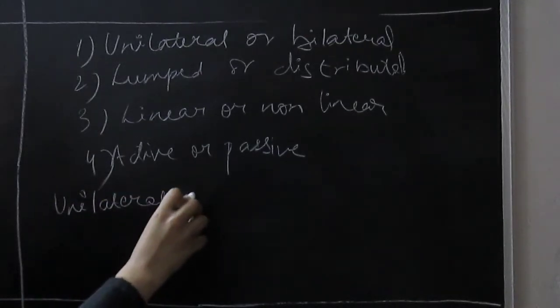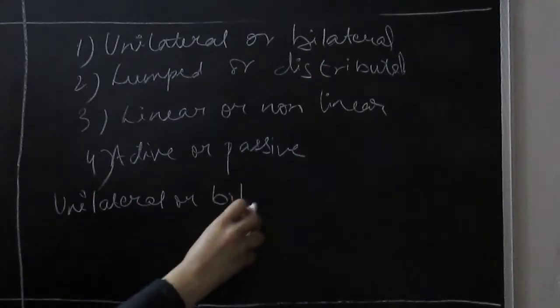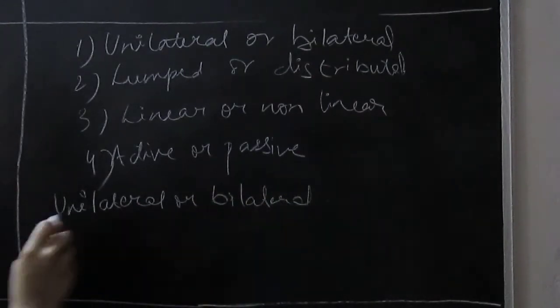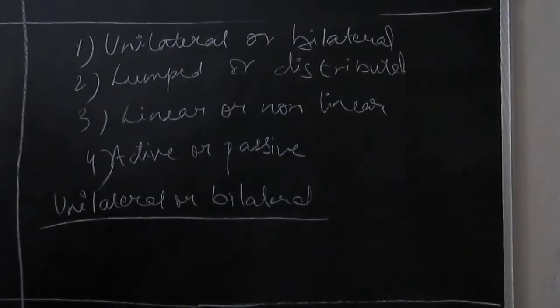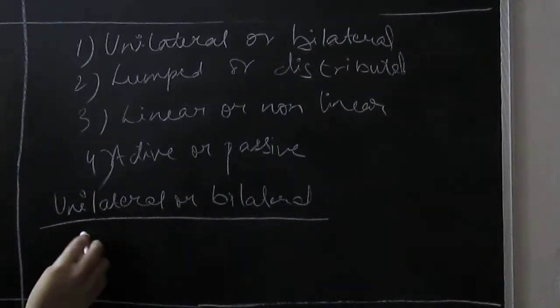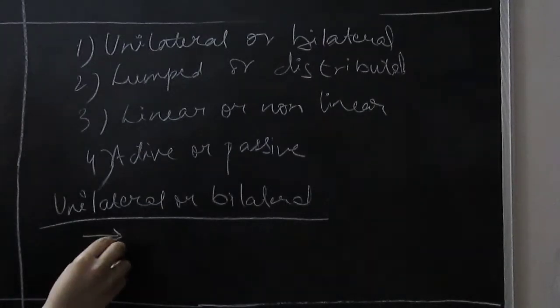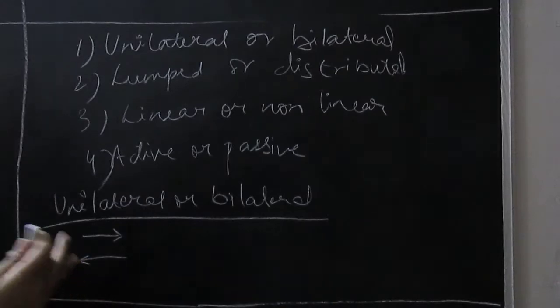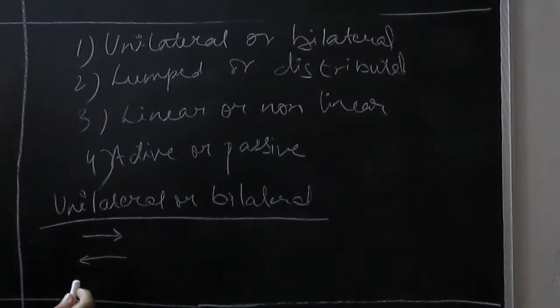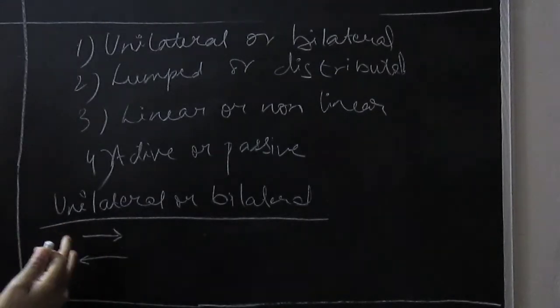First one: unilateral and bilateral. Unilateral, what happens, if we have direction, the relationship of voltage and current is different in both cases. Like a semiconductor device, if the current is going in this direction, then we define forward bias or reverse bias.